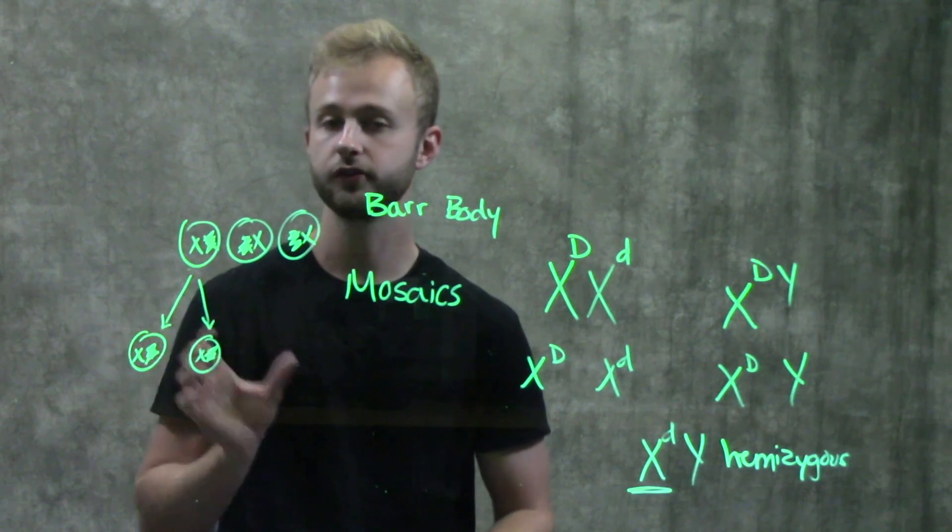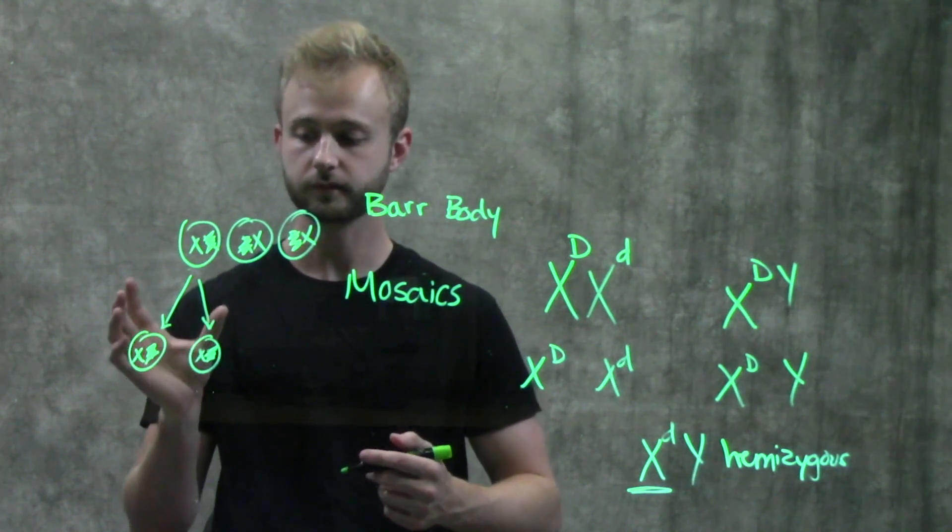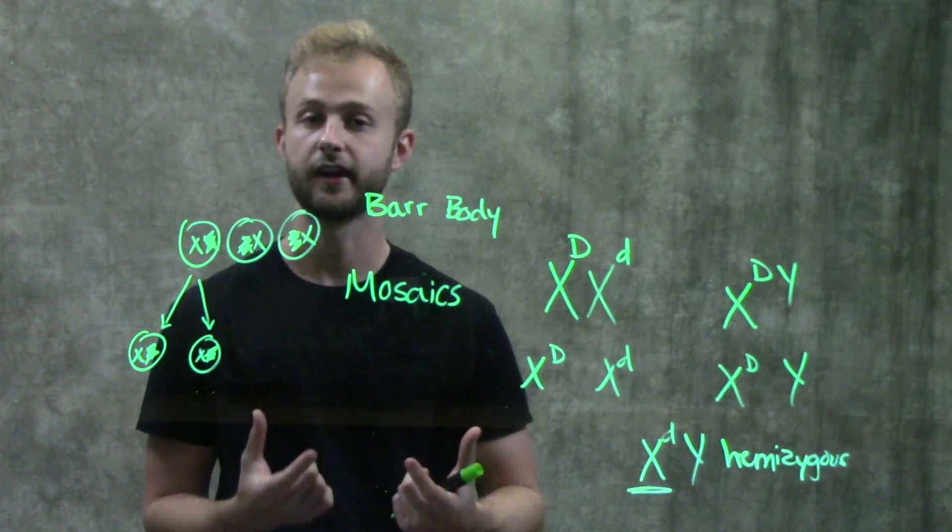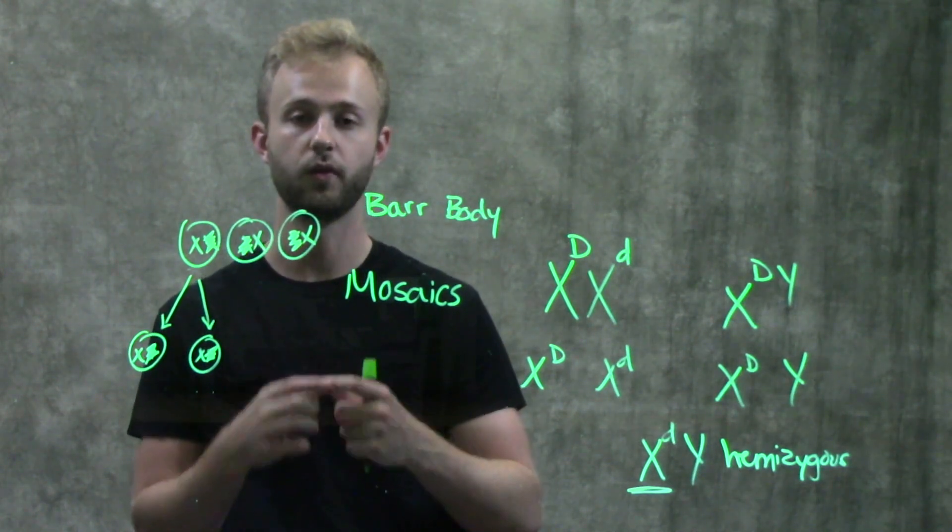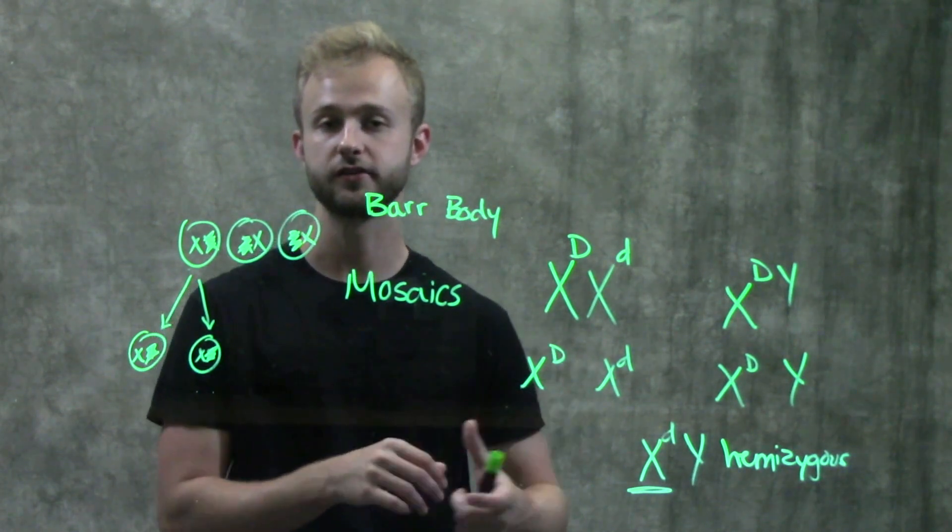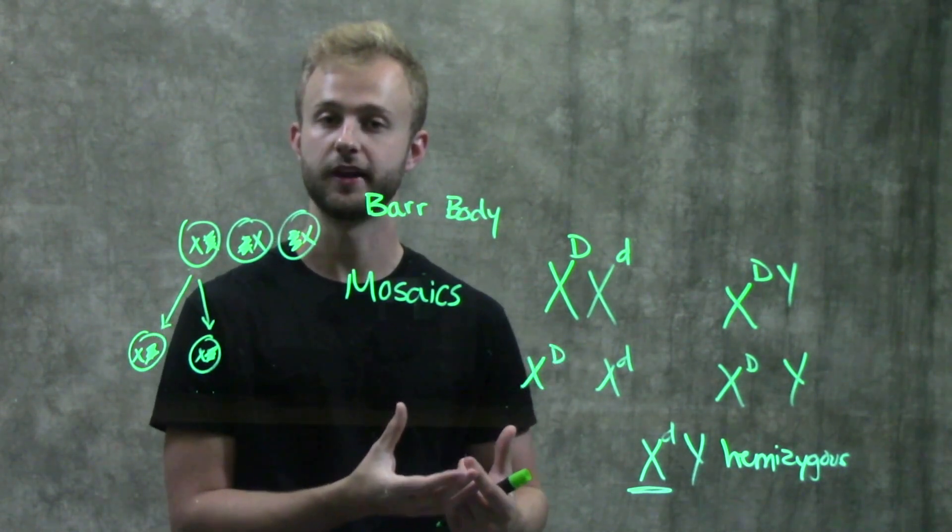So we can see this in tortoiseshell cats. So in female tortoiseshell cats, they'll have spots of different colors on their fur and that's because of X inactivation. So some spots get one chromosome inactivated that has a particular color and then other spots are going to have a different X chromosome inactivated.